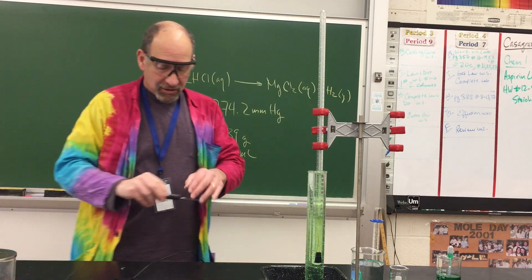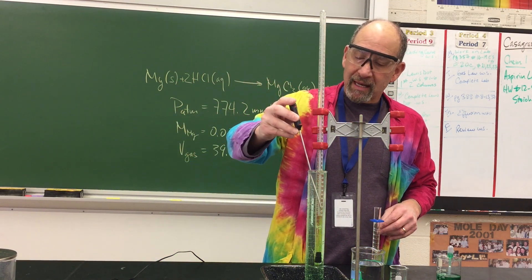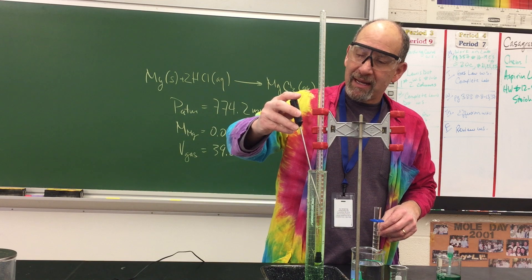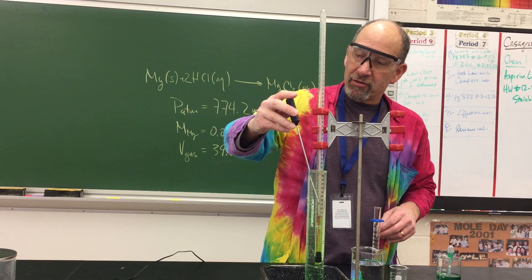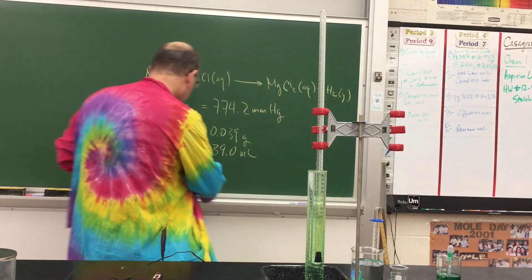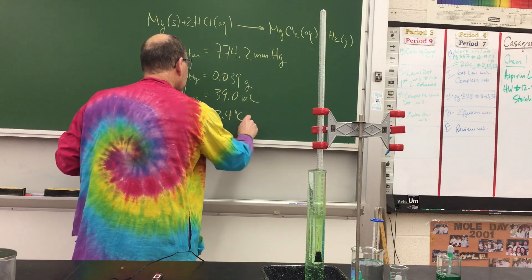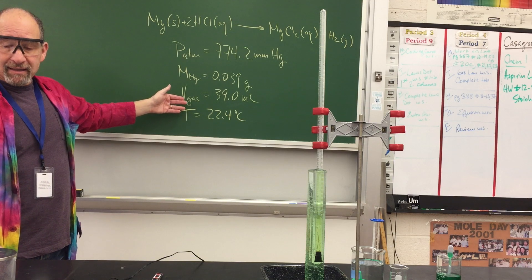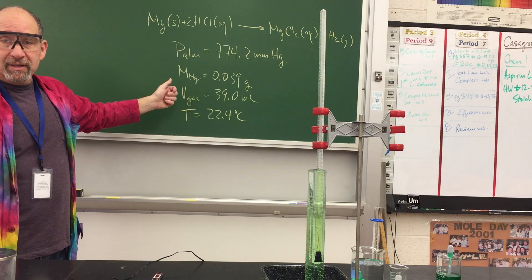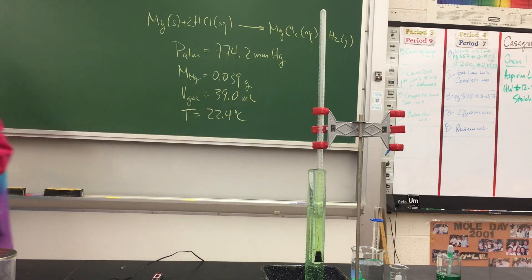The last measurement we need is the temperature. We're going to measure the temperature of the water and assume it's the same as the temperature of the gas in the Udometer. The temperature in the water is 22.4 degrees Celsius. So now you have all the data needed — mass of magnesium, atmospheric pressure, gas volume, and temperature — to calculate the R value. There are a couple of tricky calculations, and we can discuss those when we meet in the next class.